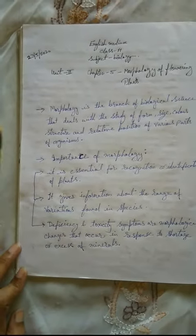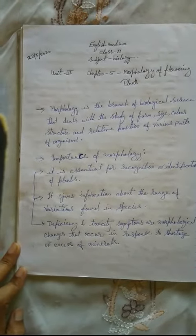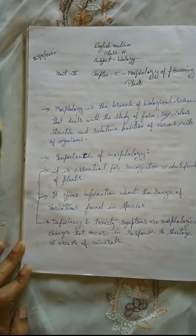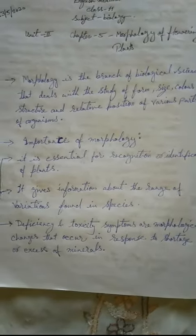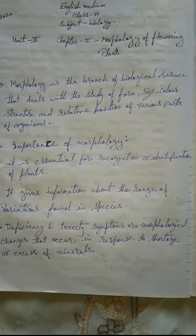Good evening everyone. Class 11, Subject Biology, Unit 2, Chapter 5: Morphology of Flowering Plants. Morphology is the branch of biological science that deals with the study of form, size, color, structure, and relative positions of various parts of an organism.